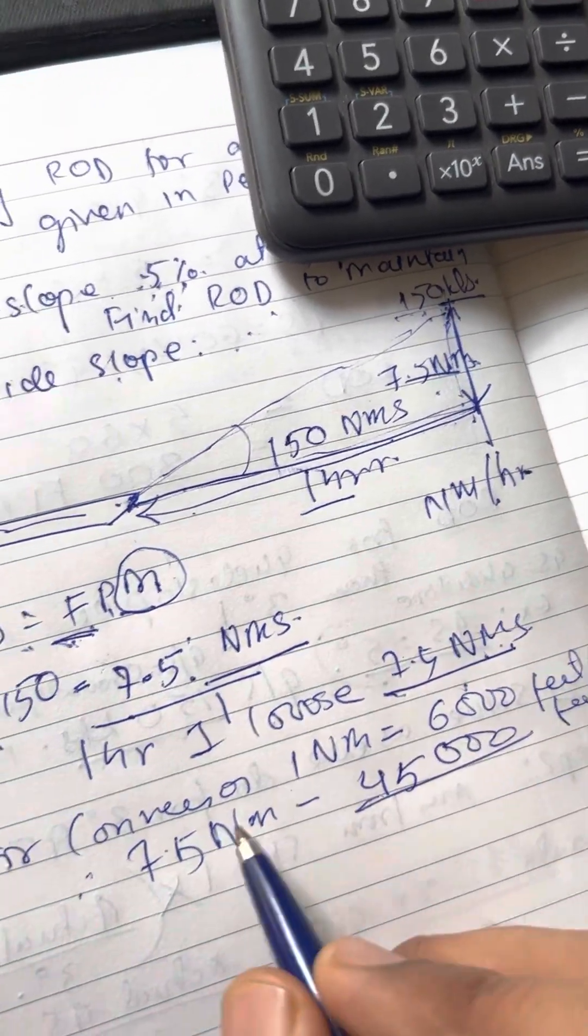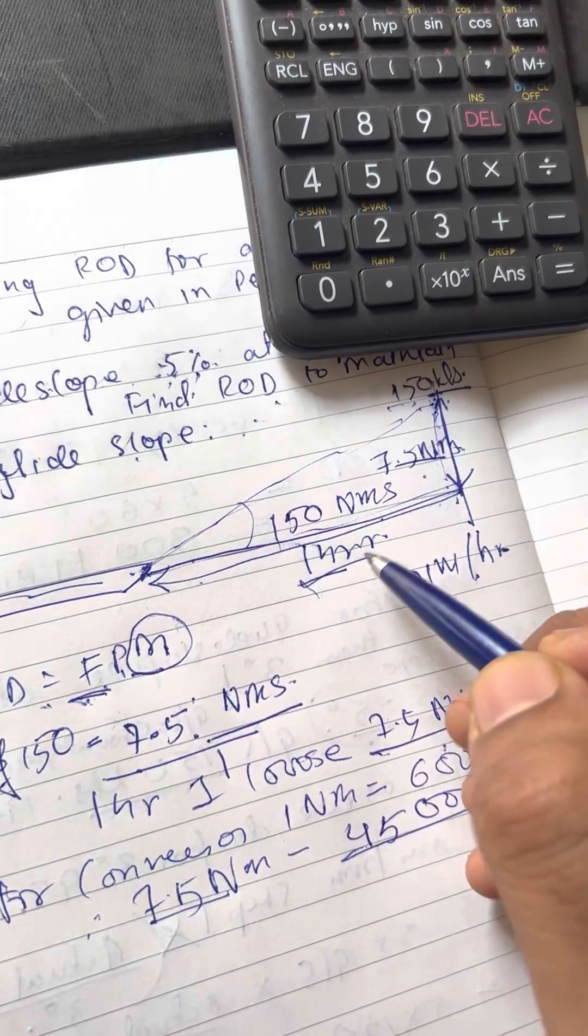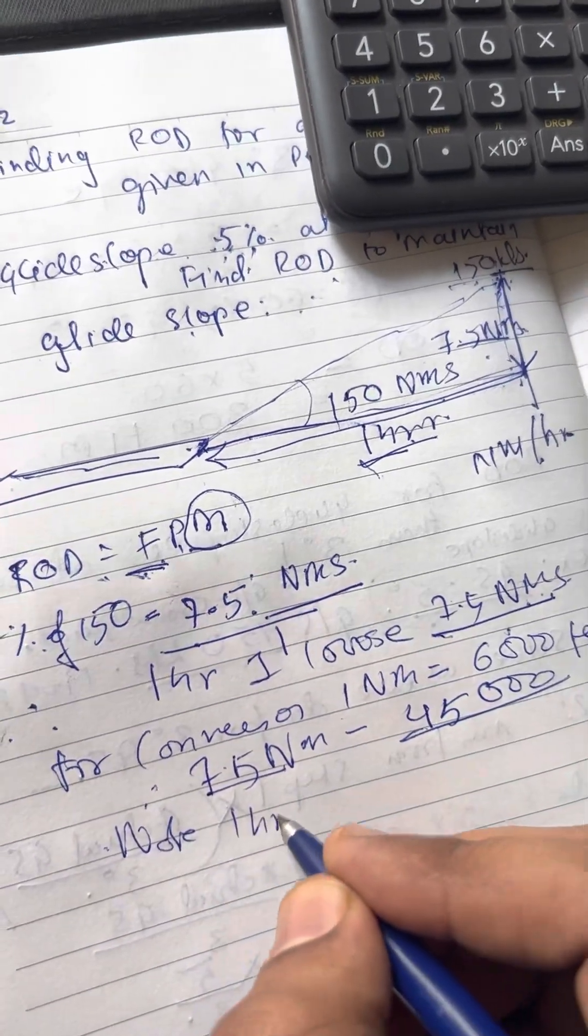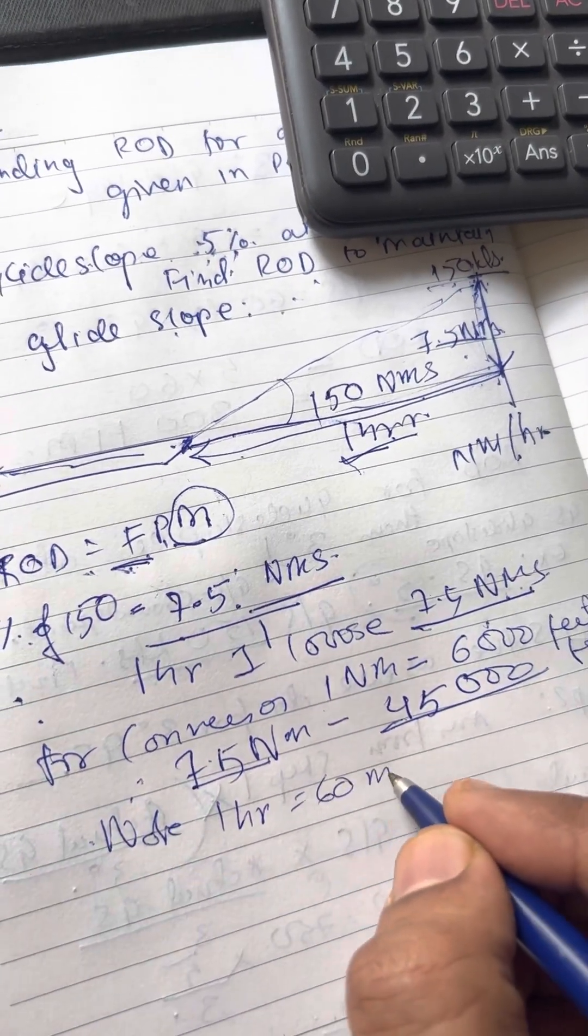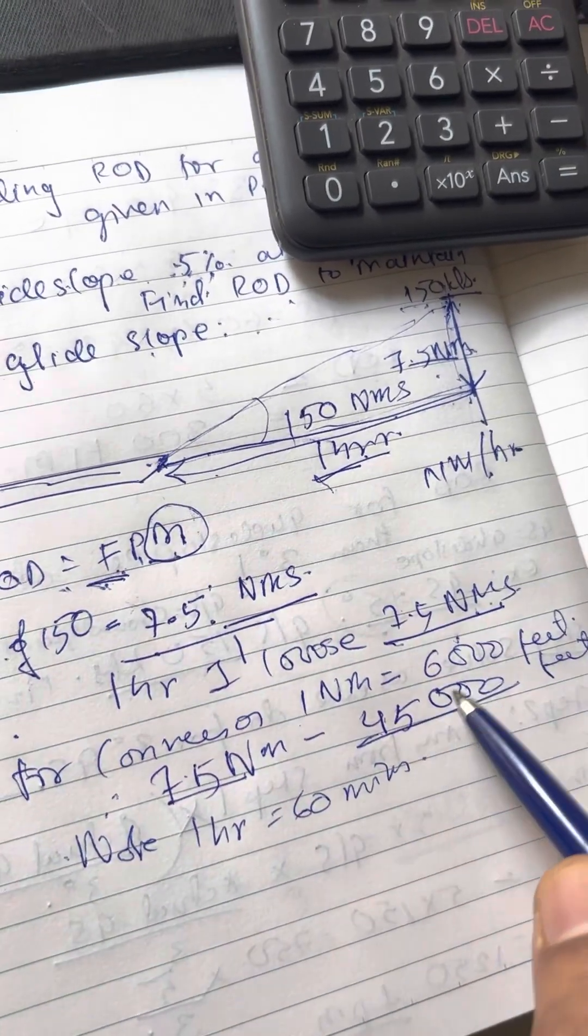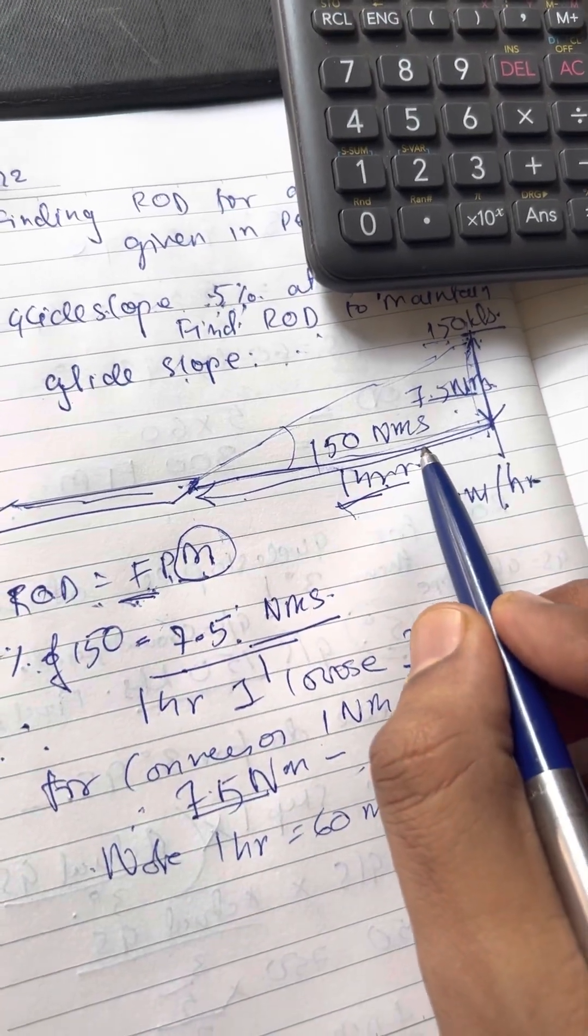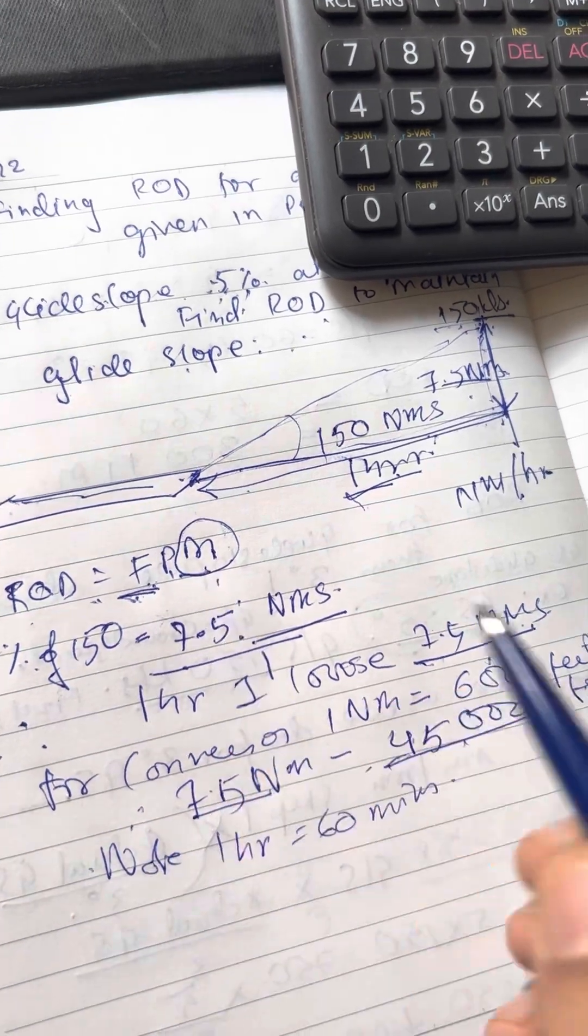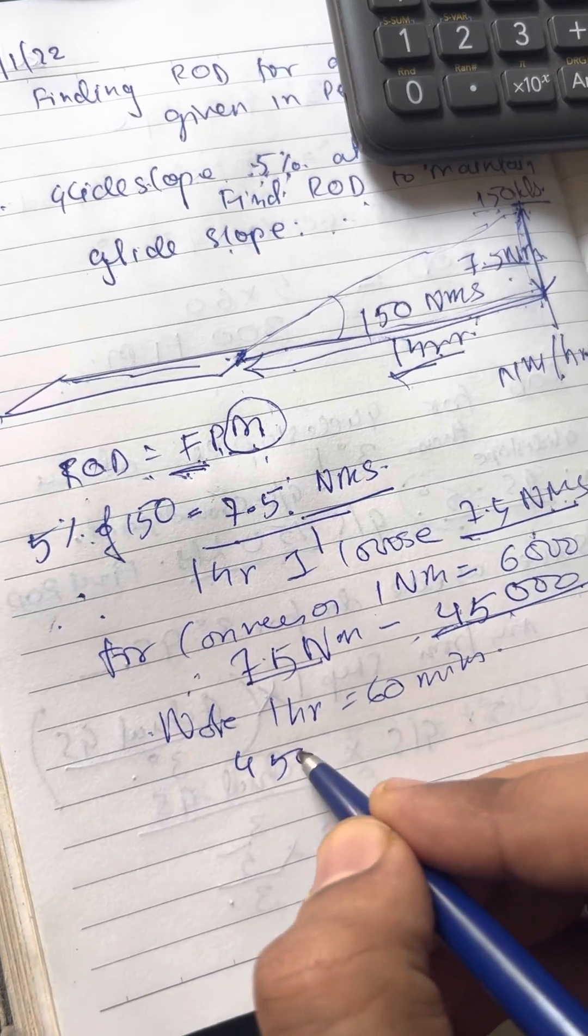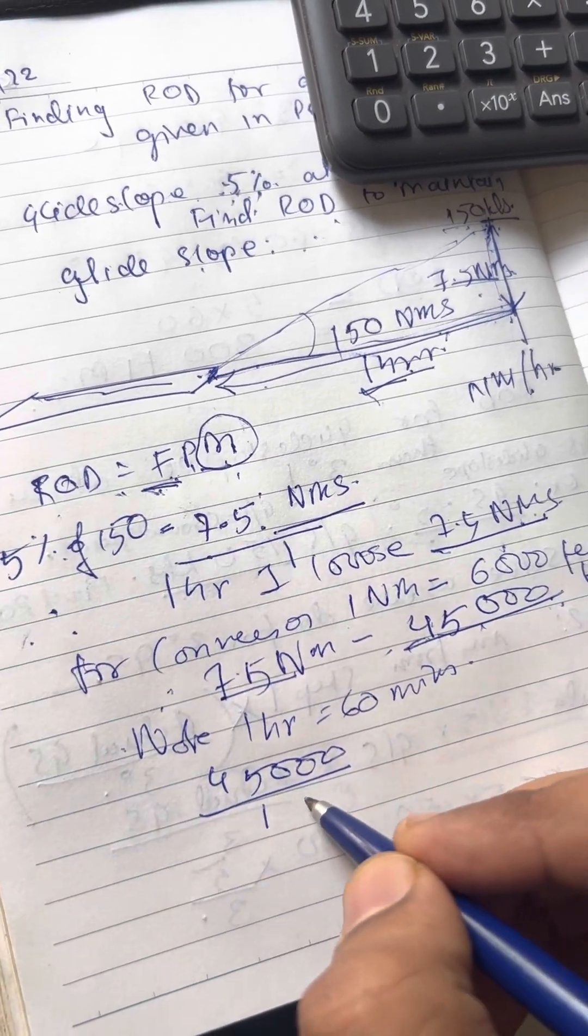Therefore, 7.5 nautical miles, I'll be losing in feet would be 45,000 feet. Now, this I was losing vertical height in one hour at this speed. 1 hour is 60 minutes. Note, 1 hour is equal to 60 minutes. I want my rate of descent in feet per minute. I've got feet. So I'm losing 45,000 feet in one hour. I want rate of descent per minute. So, how much will I lose in a minute? I'll do, if 45,000 feet is in one hour, one hour is 60 minutes.